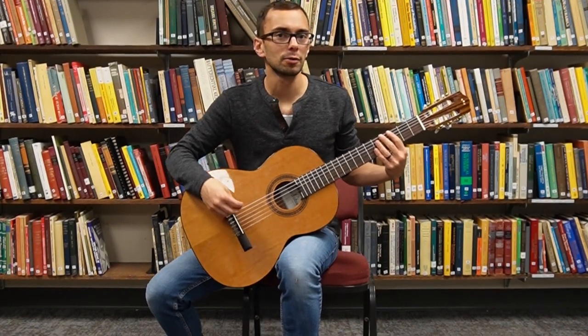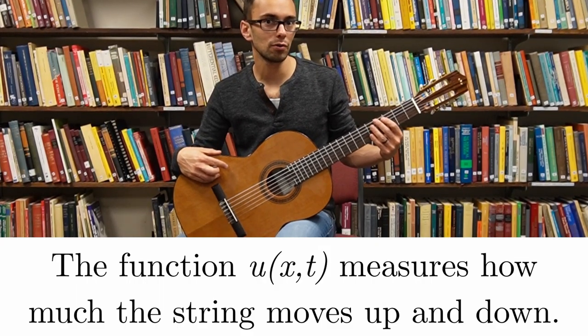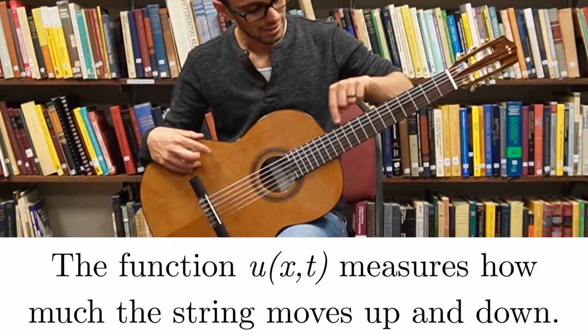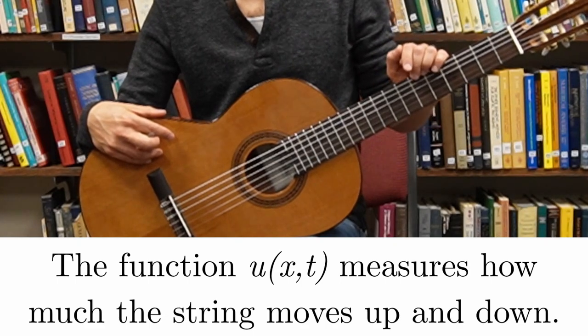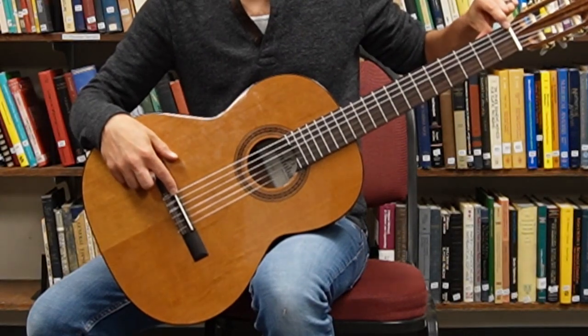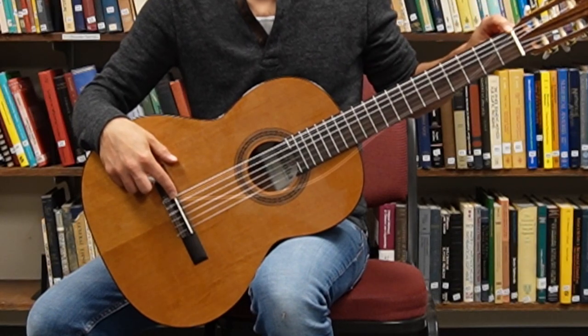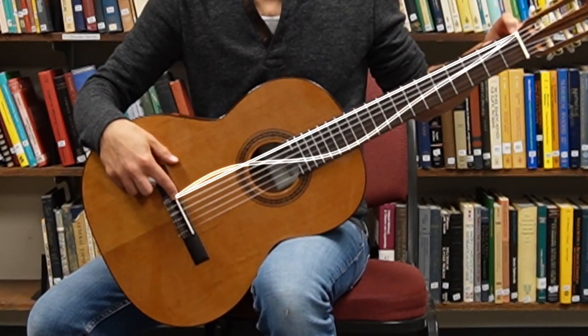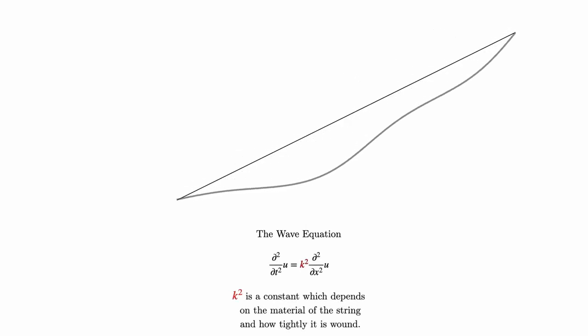From a mathematical perspective, we consider the shape of the guitar string to be given by u(x,t), where x is the position along the string and t is the moment of time. A guitar string is tamped down at either end, so the vibrations at the end are essentially zero. We can model the vibration of the string according to the wave equation. Here, k squared is a constant which depends on the material of the string and how tightly it is wound.